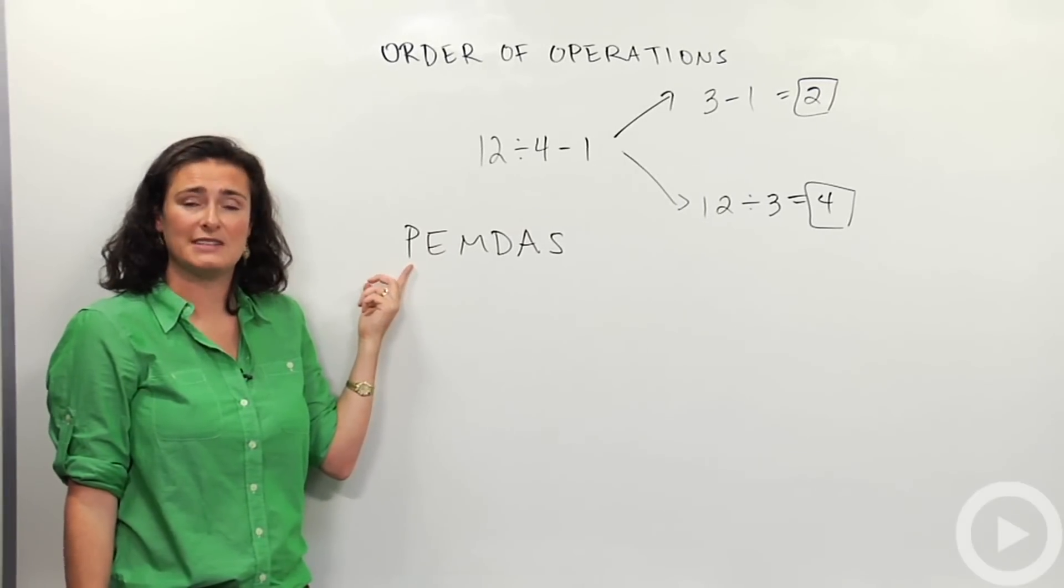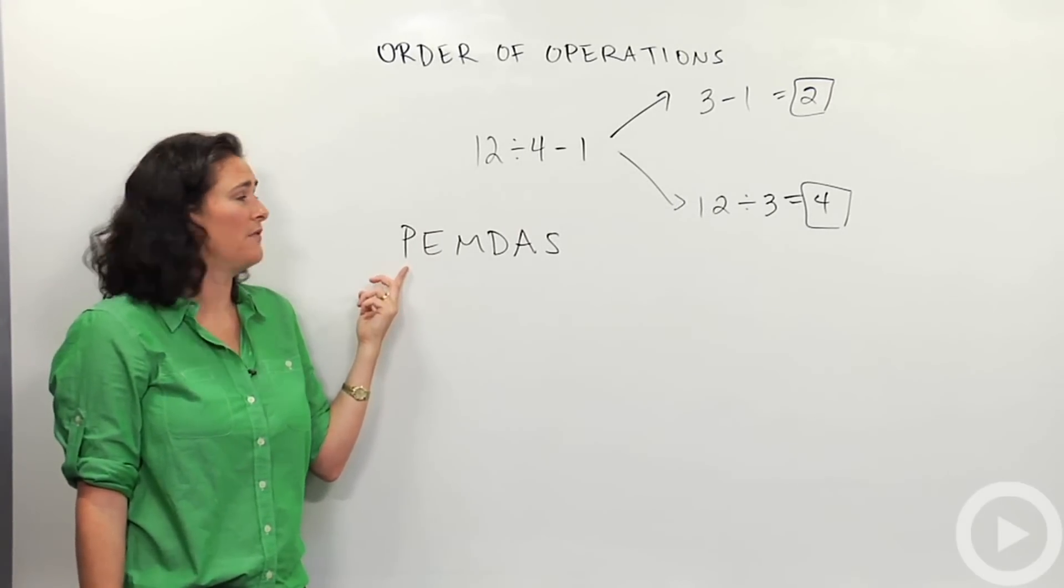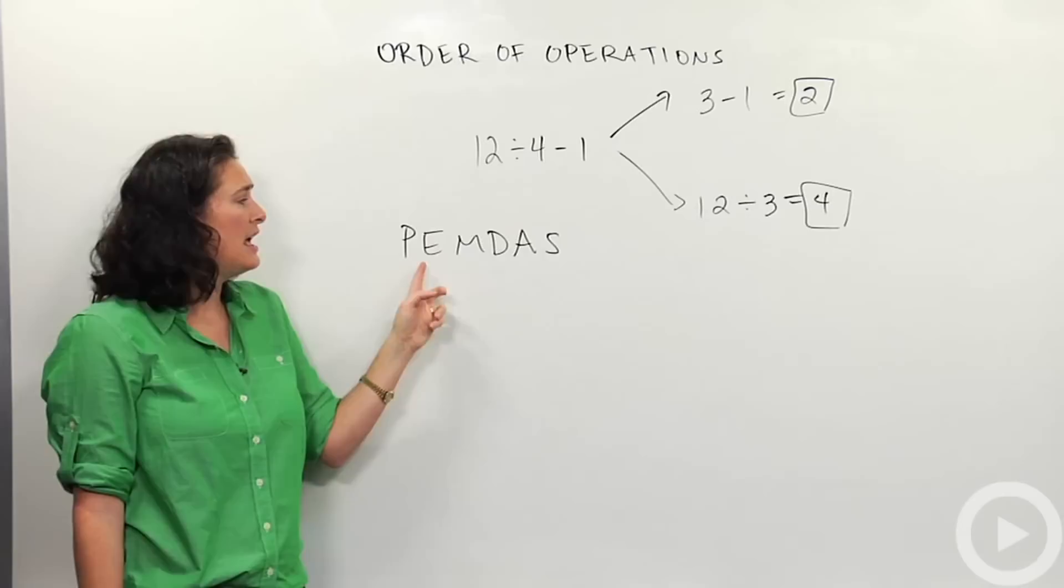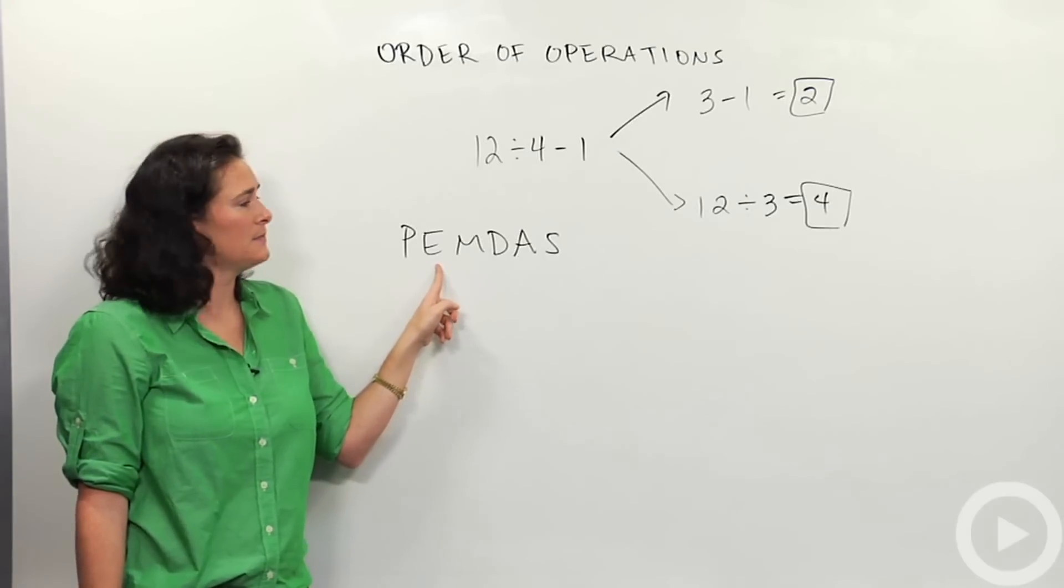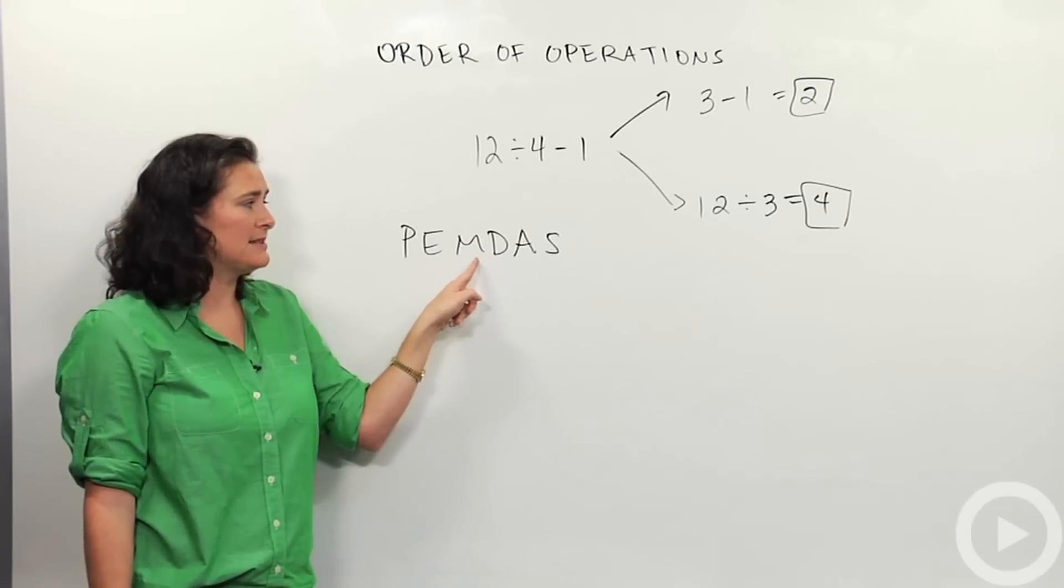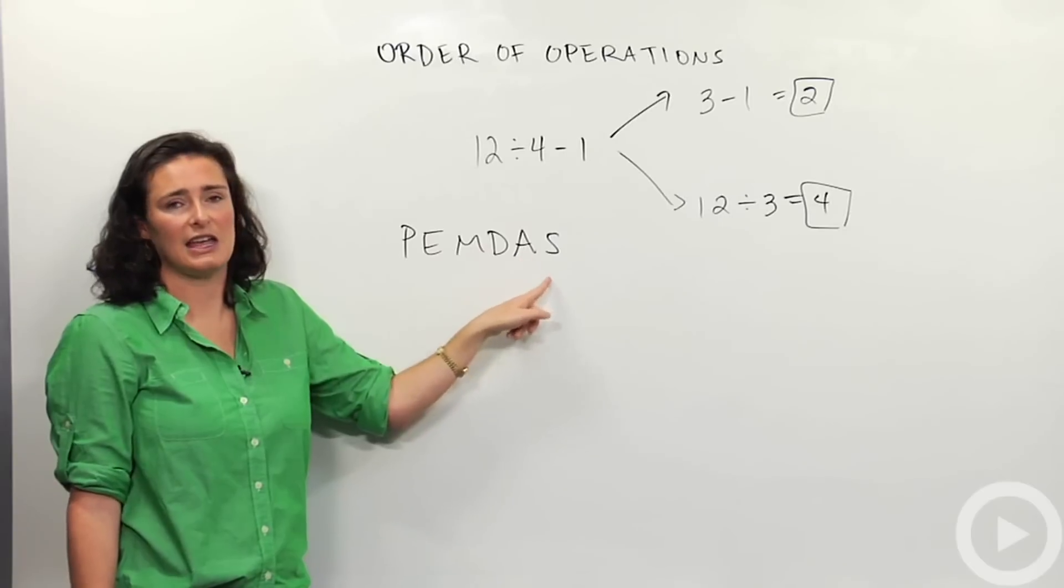P stands for parentheses or groupings. So if I had any parentheses or groupings, I would do those first. E stands for exponents. And then MD is multiplying, dividing, adding, subtracting, A and S.